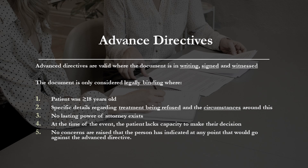All advanced directives, in order to be valid, must be in writing, signed, and witnessed. The document is only legally binding where individuals completing the advanced directives are greater than 18 years old. The document details the treatment being refused and the specific circumstances where the directive becomes valid. The patient must not have already appointed a lasting power of attorney. The patient must lack capacity at the time of the event. And there must not be any doubt regarding the patient's wishes — for example, the patient should never have indicated, at any moment, any wishes against the advanced directive.